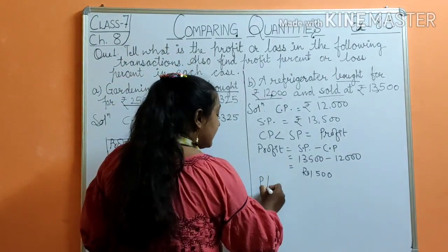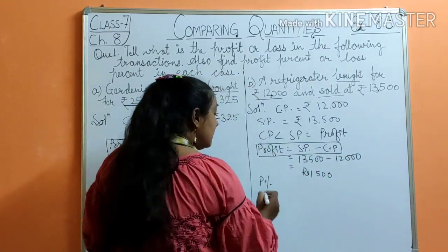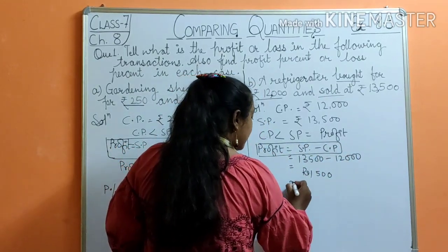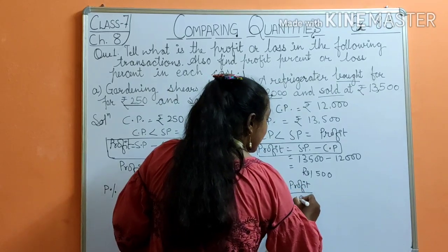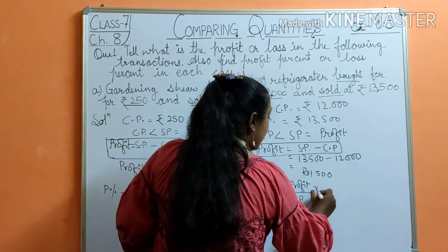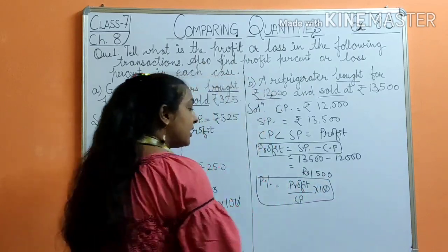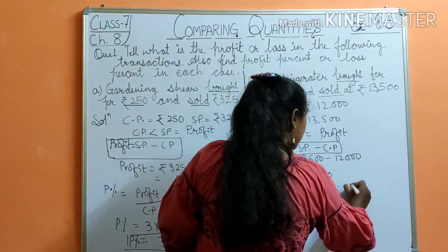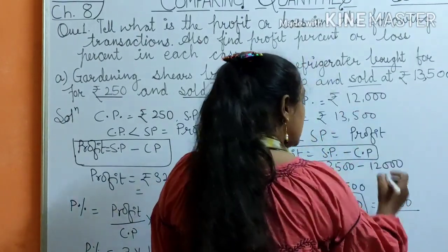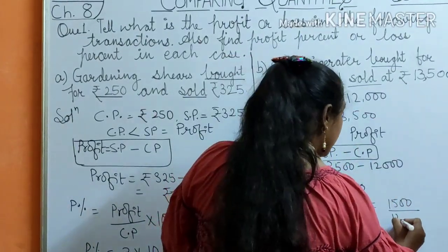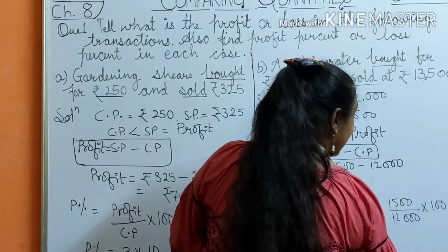The profit is Rs. 1,500. Now, the profit percent formula is: profit percent = profit upon CP, multiplied by 100. Putting the values: profit percent = 1500 upon 12,000, multiplied by 100.